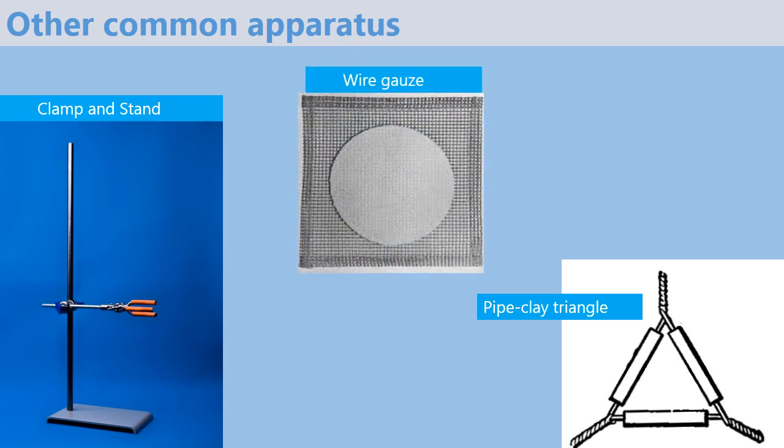Finally we have a wire gauze that is used for even distribution of heat when heating substances. Remember it is put atop a tripod stand.